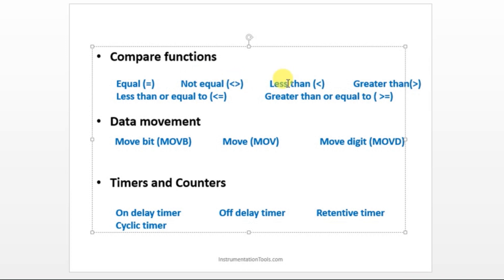Next is the data movement instruction. It is used to move the value from one place to another, one address to another. We have three instructions in the data movement.